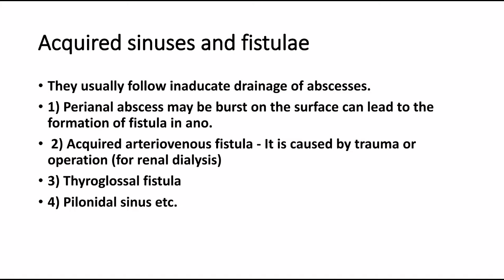Acquired sinuses and fistulae usually follow inadequate drainage of abscesses. Examples include: 1. Perianal abscess that bursts onto the surface, 2. Acquired arteriovenous fistula caused by trauma or operation for renal dialysis, 3. Thyroglossal fistula, and 4. Pilonidal sinus.